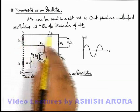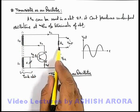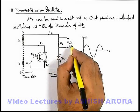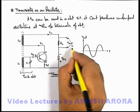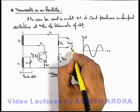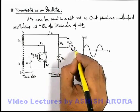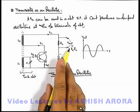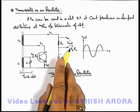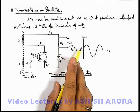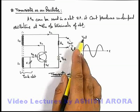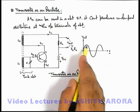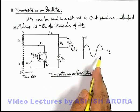So if the collector current is varying sinusoidally, the output voltage — which can be written as Ic × RL — will be a sinusoidal output. This output voltage varies with time in a sinusoidal function.